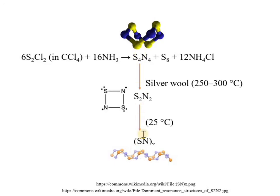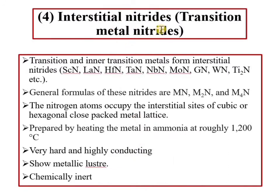The fourth class is interstitial nitrides. Just as interstitial carbides are formed by transition metals, interstitial nitrides are also formed by transition metals and inner transition metals.